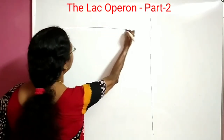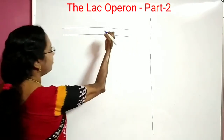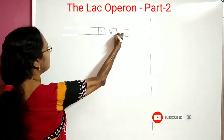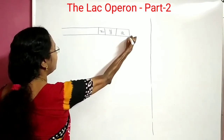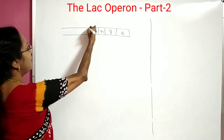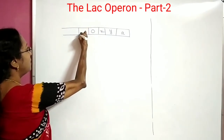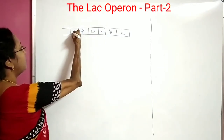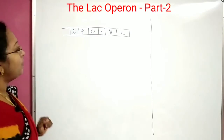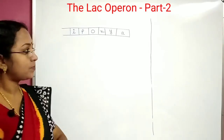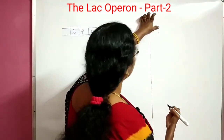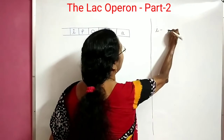Lac operon, like any other operon, has three structural genes: the Z gene, the Y gene, and the A gene, which produce their respective mRNA and then the enzymes. The expression of these genes is regulated by an operator, a promoter, and a regulatory gene denoted as the I gene.